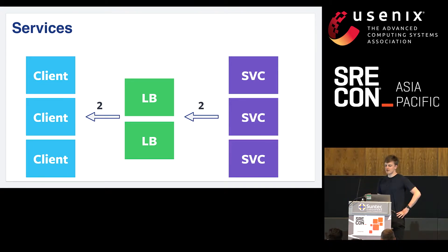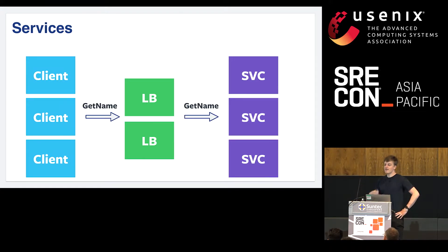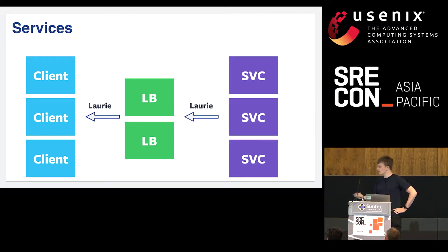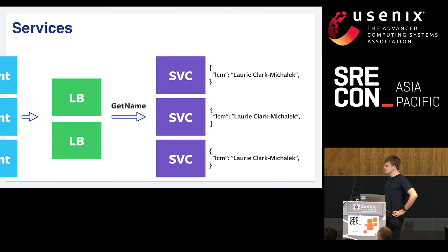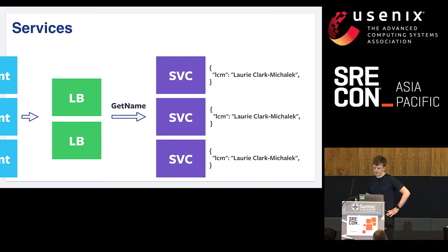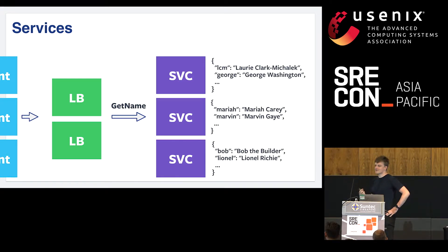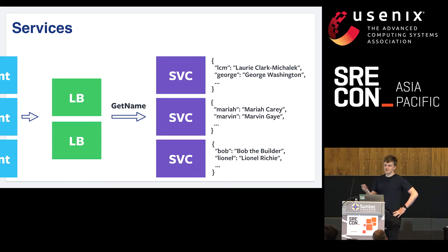One plus one is an interesting query because it doesn't require any real information to process it — you need to understand Arabic numerals and what plus means. But any random CPU can answer that. This is very different from queries in services that look more like databases. For example, my username at work is LCM. If I write a service implementing get_name, it will return 'Laurie'. But this isn't something any random CPU can implement, because we need to know the mapping from username to full name. This is pretty simple with one user, but if you're moderately successful, you end up with more users than fit on a single machine, and that's where we start to see different data on different instances.